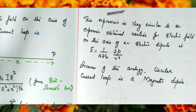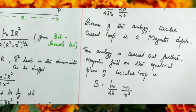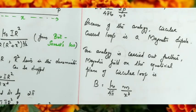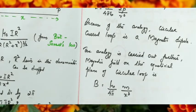So we have studied two examples of magnetic dipoles: the rectangular current loop and the circular current loop. The magnetic field on the axial plane of a circular current loop is B = (μ₀/4π)·(2M/X³), and on the equatorial plane it is B = (μ₀/4π)·(M/X³).